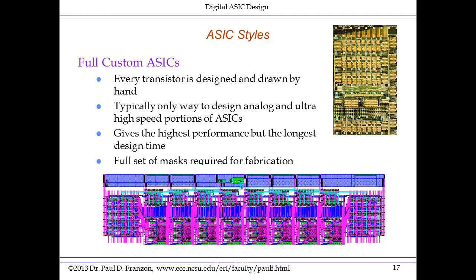Examples include all analog functions, high-speed I/O, phase-locked loops, and some aspects of memory interfaces. These give the highest performance, but take a very long design time. They're very expensive to make, and a full set of masks is required for fabrication. One part of the chip shown on the top right is displayed at the transistor level below.